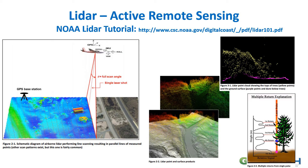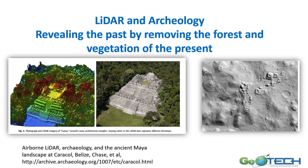LiDAR is a little different — it's active remote sensing. There's an excellent tutorial from NOAA on LiDAR. An airplane collects a swath at an angle by sending out single laser shots and collecting the returns. The first return would typically hit the tops of objects, and the last return would hit the ground. This is very useful because we can differentiate these returns to visualize what the ground looks like. In archaeology, for example, LiDAR is very useful in overgrown areas where you can get that last return and see the ground surface through the trees.